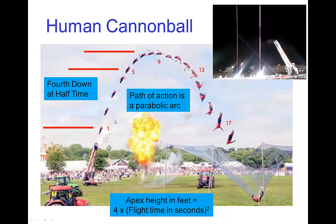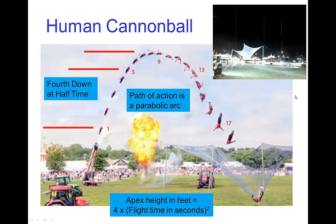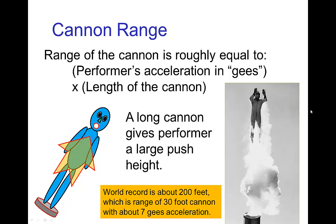Here we see the path of action for a performer doing one of these human cannonball acts — a parabolic arc for the path of action. The range of the cannon depends on the length of the cannon, which takes the role of the push height, and the acceleration the performer is subjected to as they are pushed up the cannon.